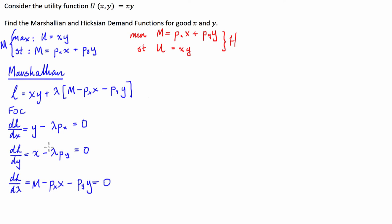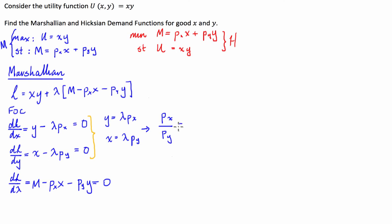From those first two equations we rearrange to get Y equals λPX and X equals λPY. From there we can get our marginal rate of substitution by taking the ratio PX over PY — the multiplier λ cancels — and we get PX/PY equals Y/X.